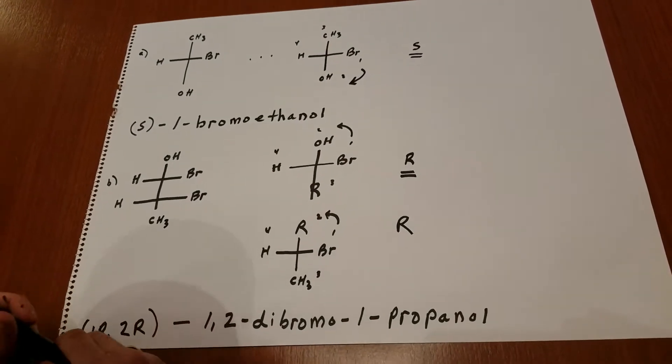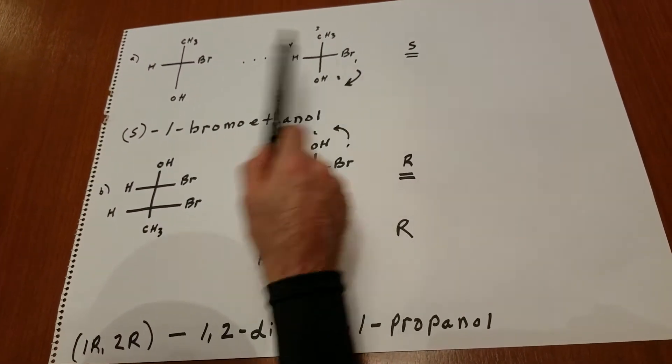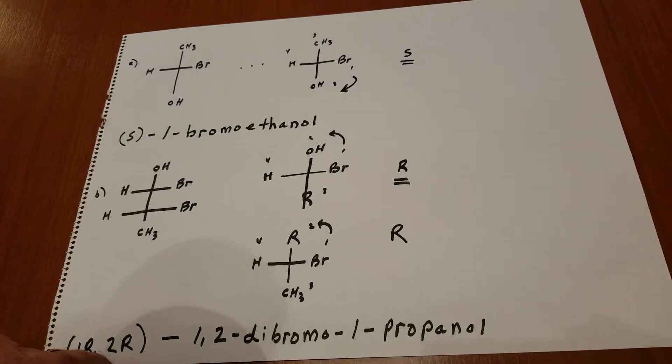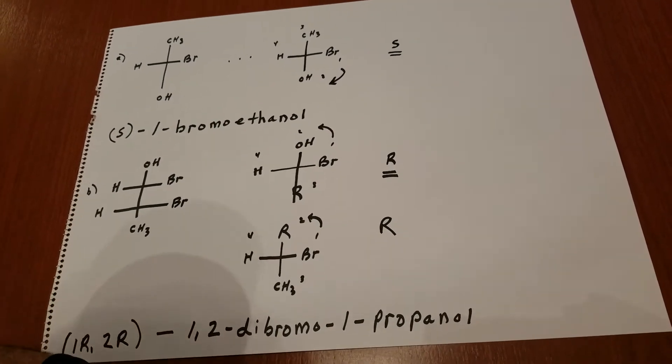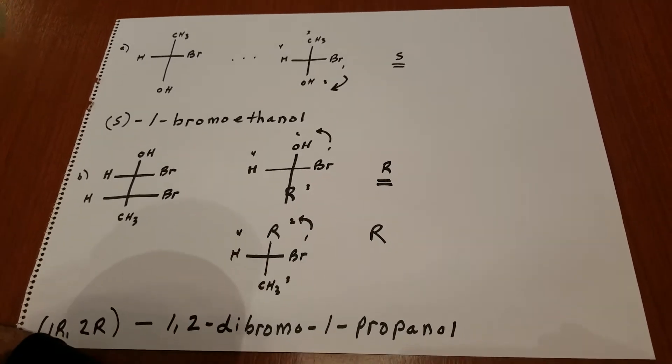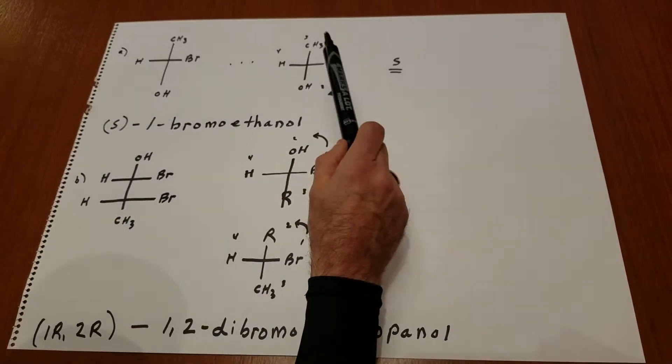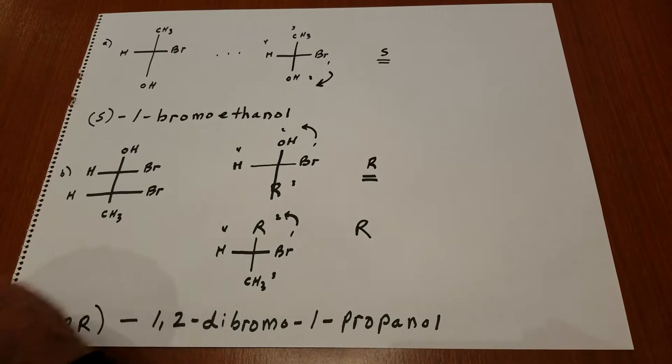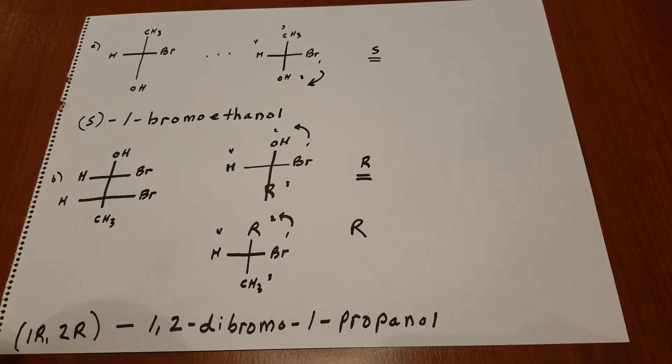The first thing you would do on this compound is you go off to the side, and you assign group priority according to atomic number. This is known as the Cahn-Ingold-Prelog system. For your purposes, you don't need to really understand the name other than how to do it. Bromine is number one in priority. The OH is number two, methyl is three, and the H is four.